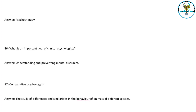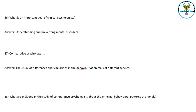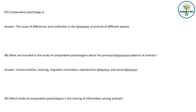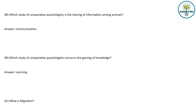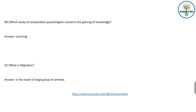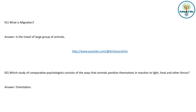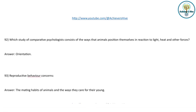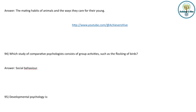Comparative psychology is the study of differences and similarities in the behavior of animals of different species. Comparative psychologists study principle behavior patterns including communication, learning, migration, orientation, reproductive behavior, and social behavior. Communication is the sharing of information among animals. Learning concerns the gaining of knowledge. Migration is the travel of large groups of animals. Orientation consists of the ways animals position themselves in reacting to light and other stimuli. Reproductive behavior concerns the mating habits of animals and the way they care for their young. Social behavior consists of group activities such as the flocking of birds.